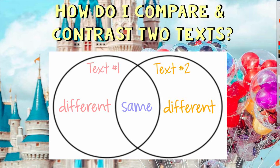You might be asking yourself, how do I compare and contrast two texts? Whenever we're comparing and contrasting two different texts, we always need to use a Venn diagram. A Venn diagram has two circles that overlap. In the first circle you talk about the first text — all the differences you noticed. In the second circle you talk about the second text and its differences. Where the circles overlap in the middle is where you talk about how the two texts are similar.